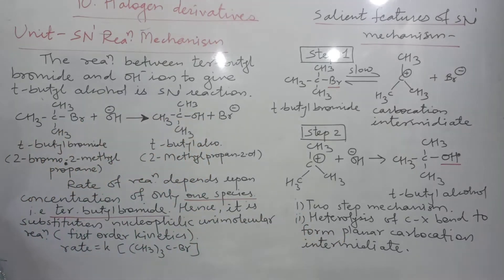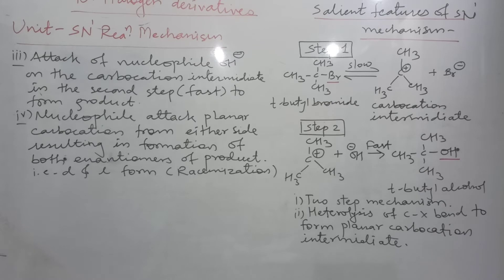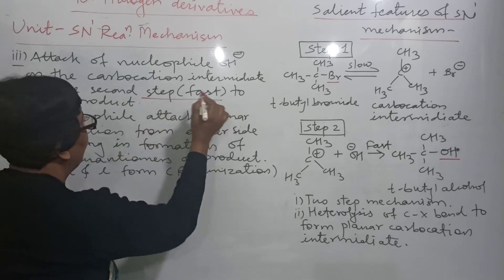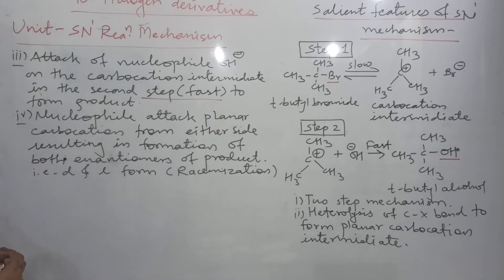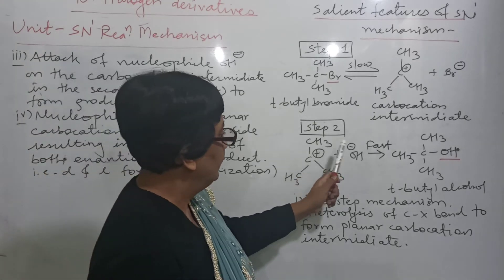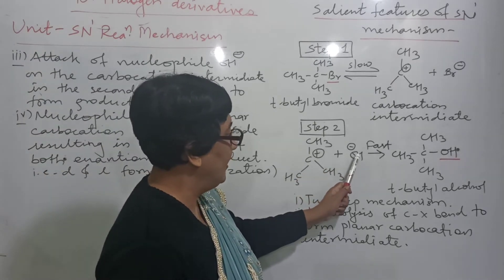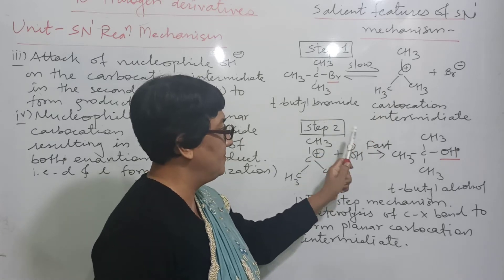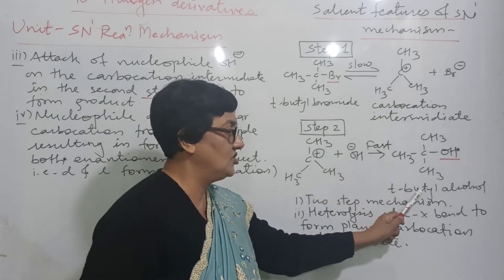And the next point is attack of nucleophile OH on the carbocation intermediate in the second step, which is the fast step to form the tertiary butyl alcohol.